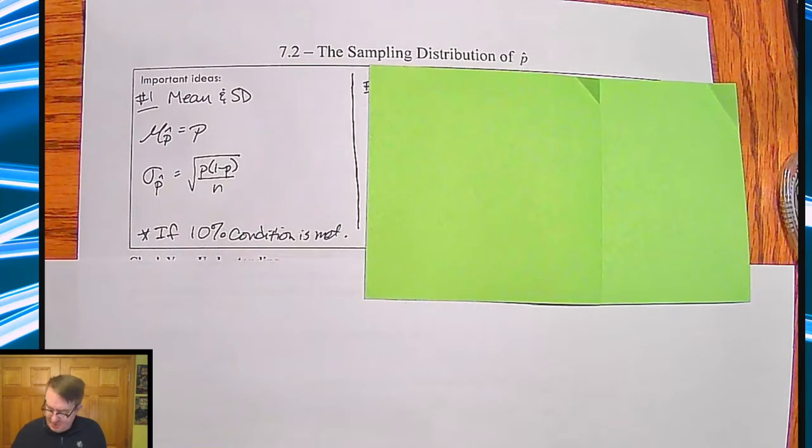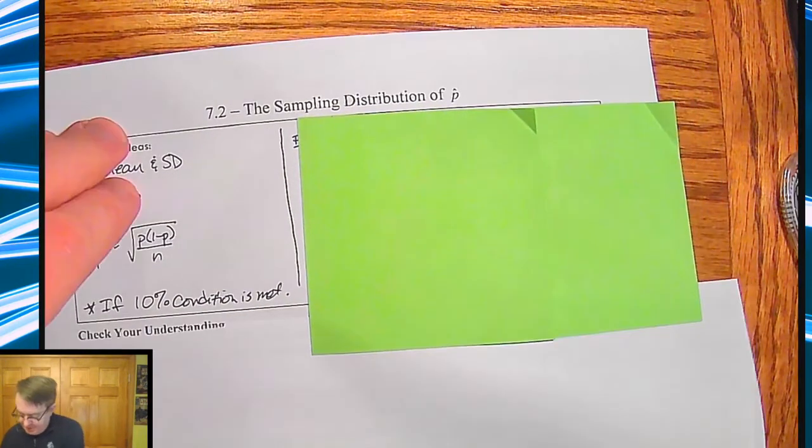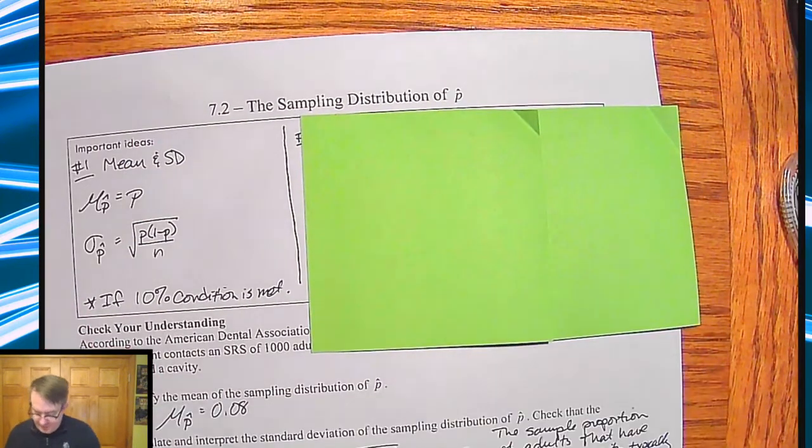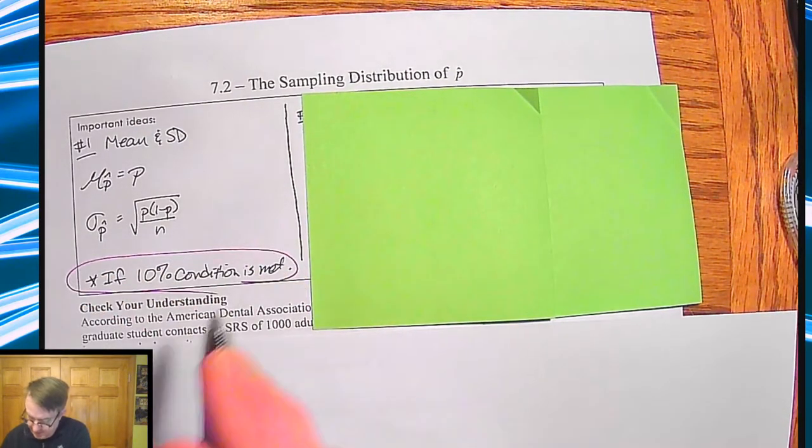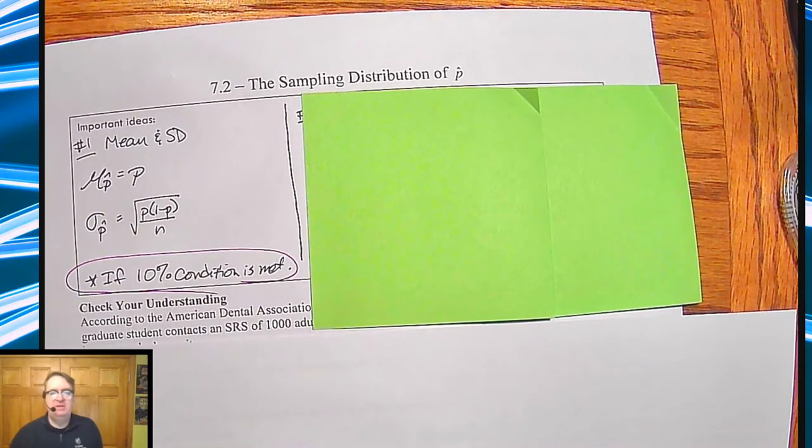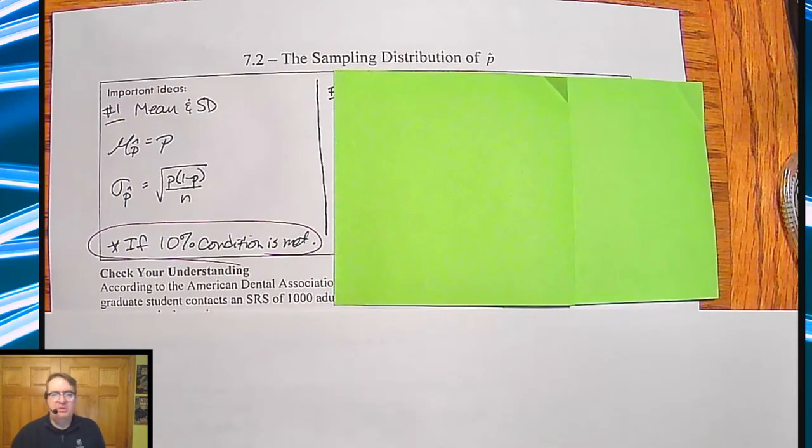And then last but not least, remember this is also, this is all if the 10% condition is met. So that's a fairly important part. You need to have at least, you know, your sample can't be any larger than 10% of your population.